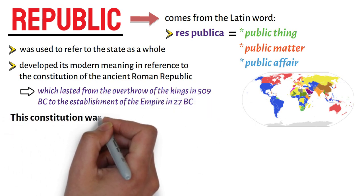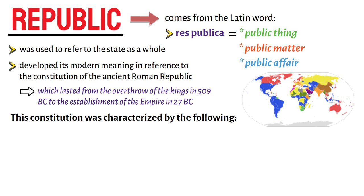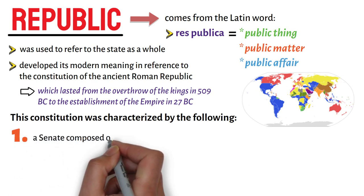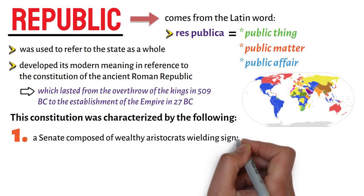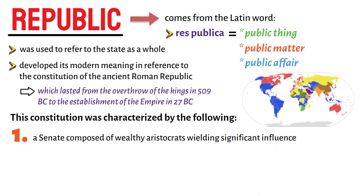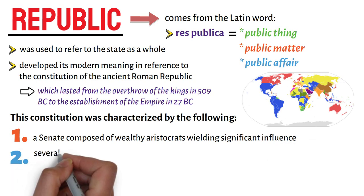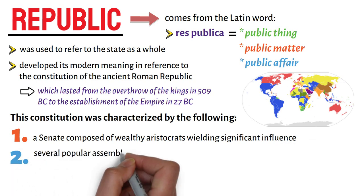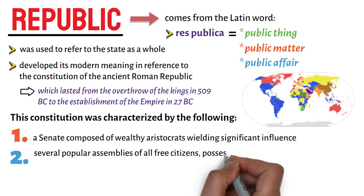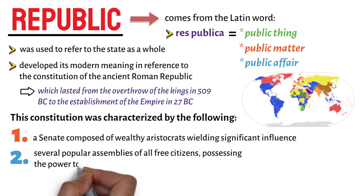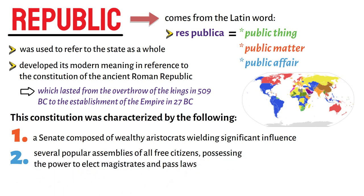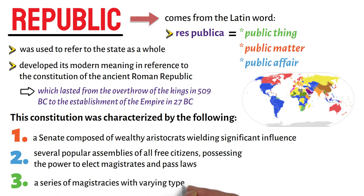This constitution was characterized by the following. First, a senate composed of wealthy aristocrats wielding significant influence. Second, several popular assemblies of all free citizens, possessing the power to elect magistrates and pass laws. And third, a series of magistracies with varying types of civil and political authority.